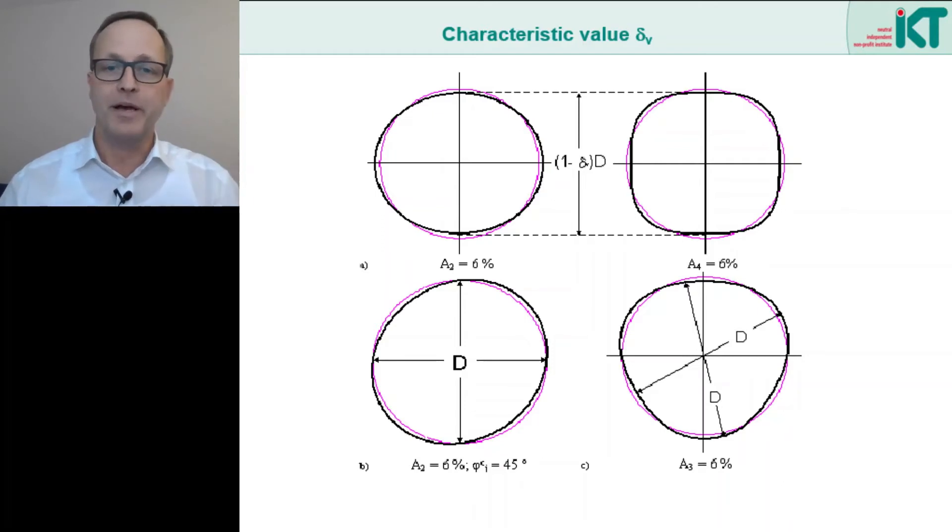In the example above, we see on the left side the classical elliptical deformation, precisely as assumed in design. It is called two-wave deformation because of two maxima, one in the crown and one in the invert. On the right side, we see a four-wave deformation, mostly caused by extreme compaction of the side fill. Both cases can be described very well by measuring the vertical diameter change.